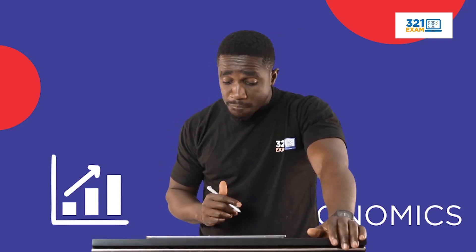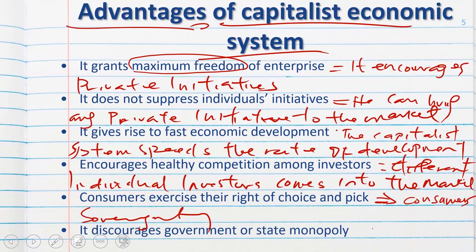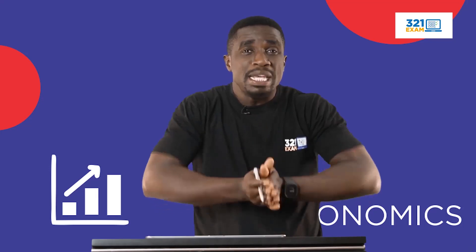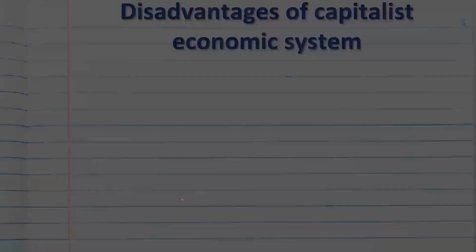Lastly, the capitalist economy discourages government or state monopoly. Government will no longer have the right to produce exclusively some products, because private individuals are already in the business of production. Therefore, government monopoly is broken.